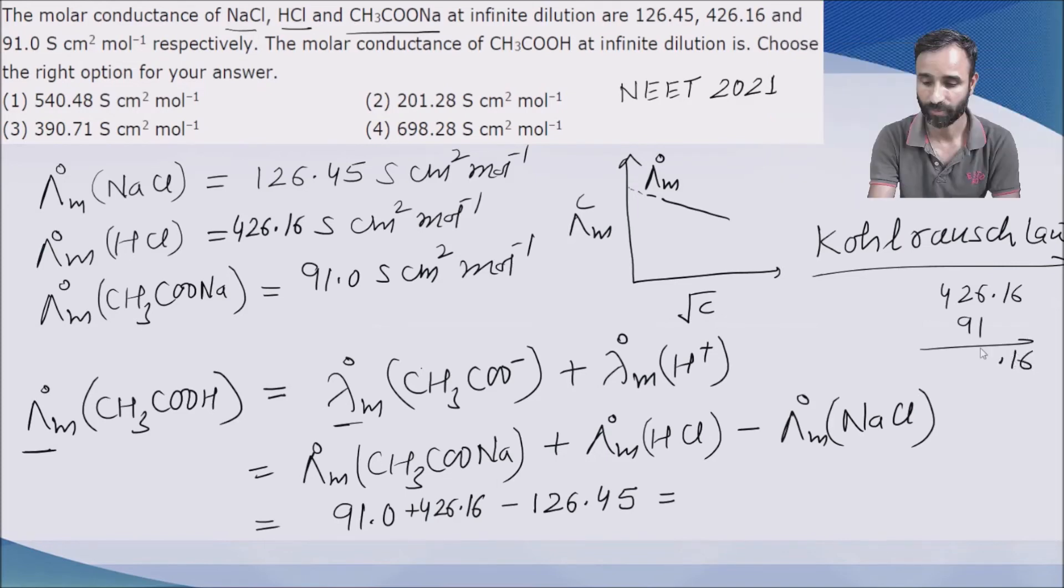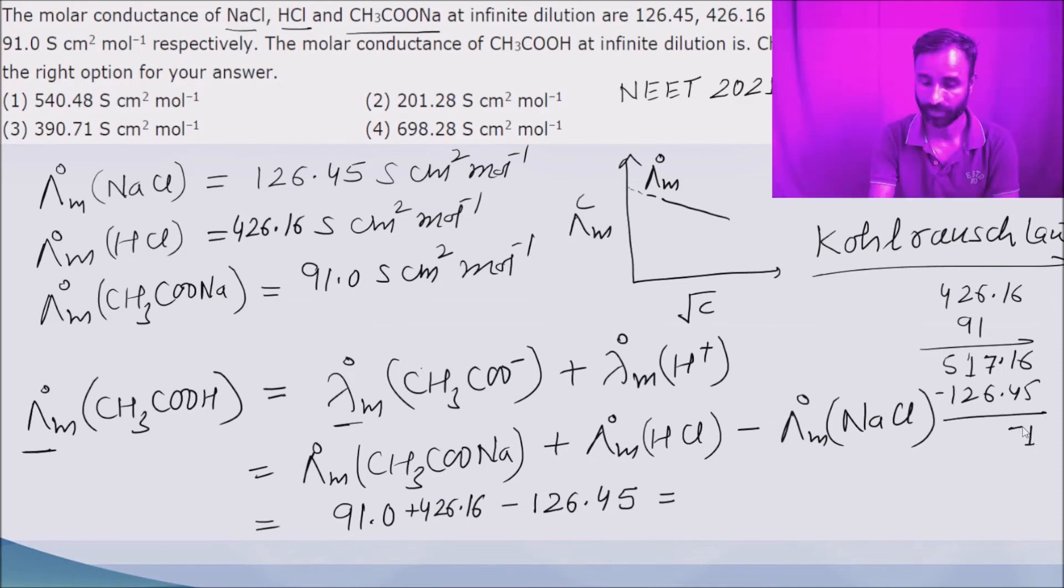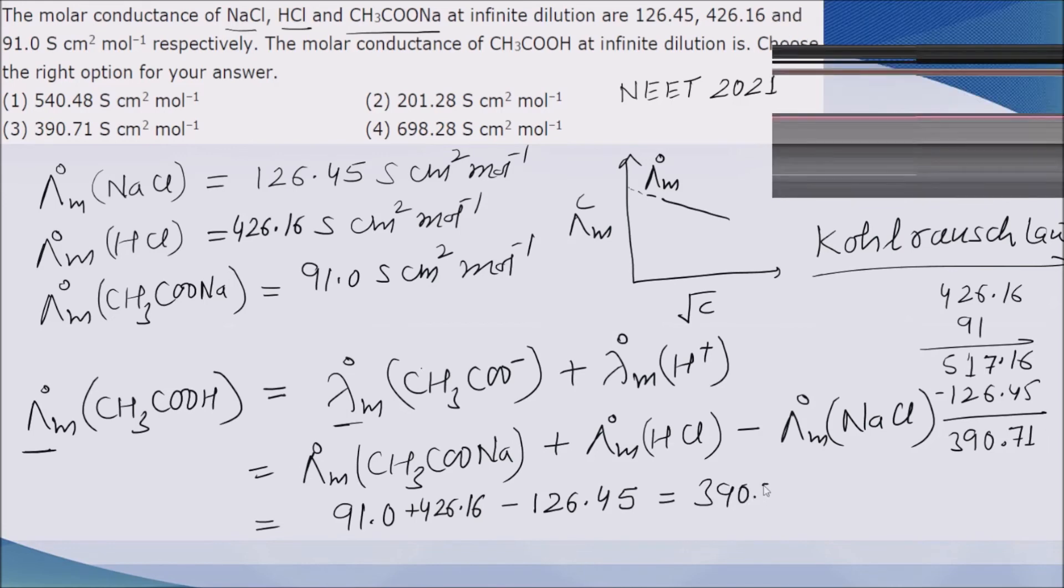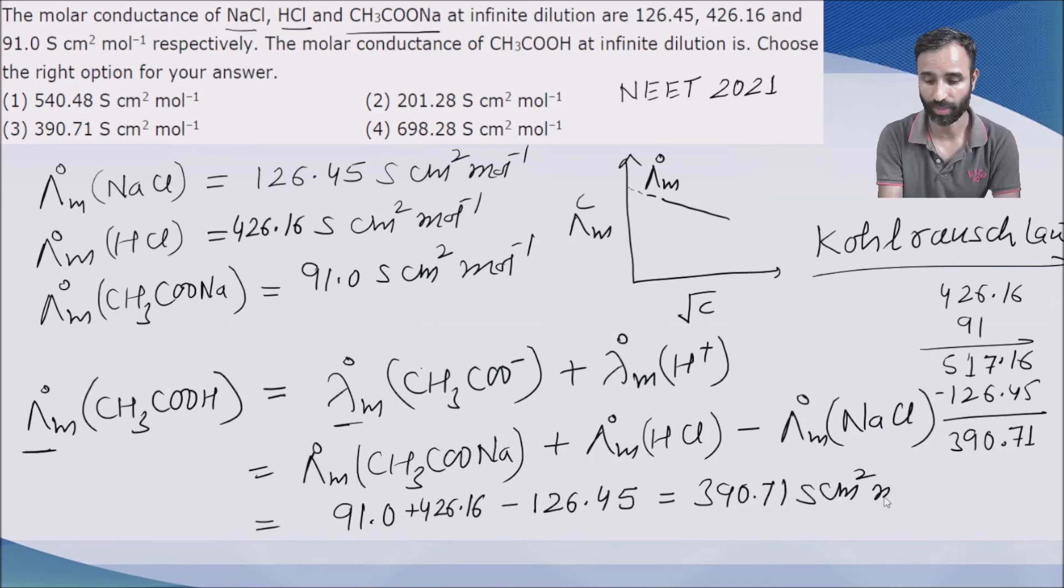So it is 517.16, and 126.45 is subtracted. So it is 390.71 S centimeter square per mole, means option 3 is correct.